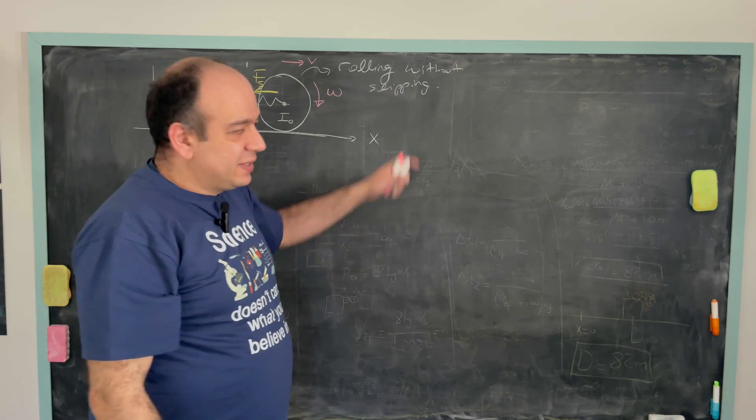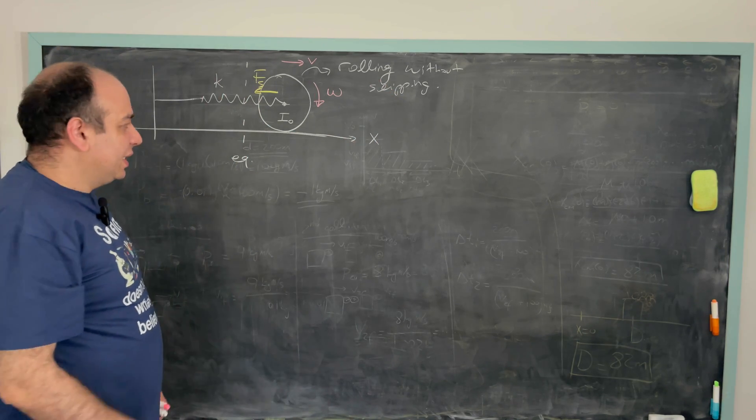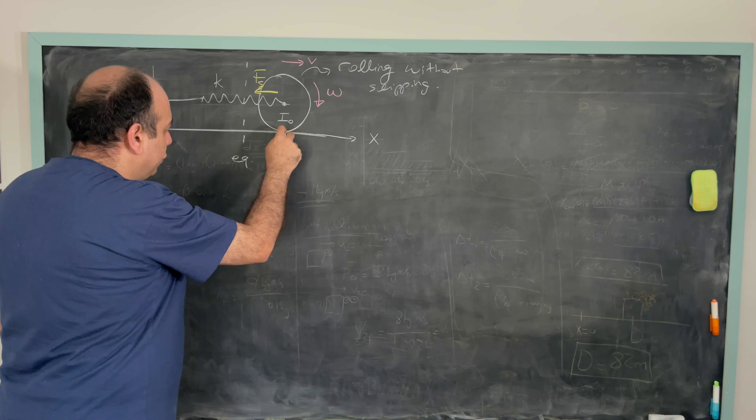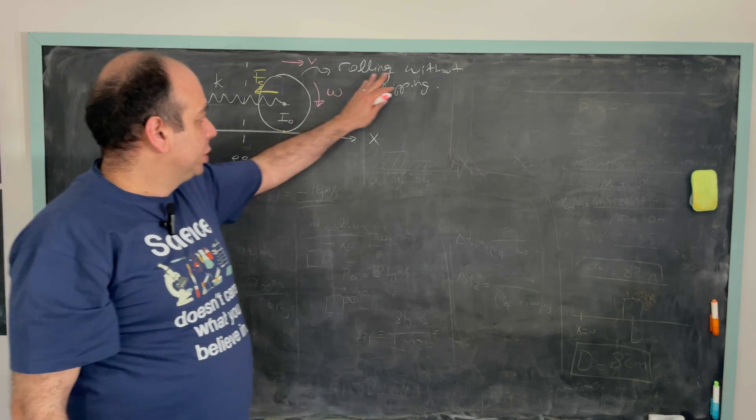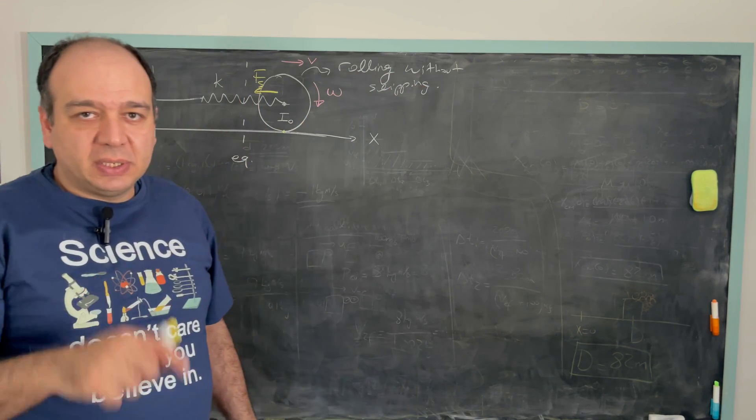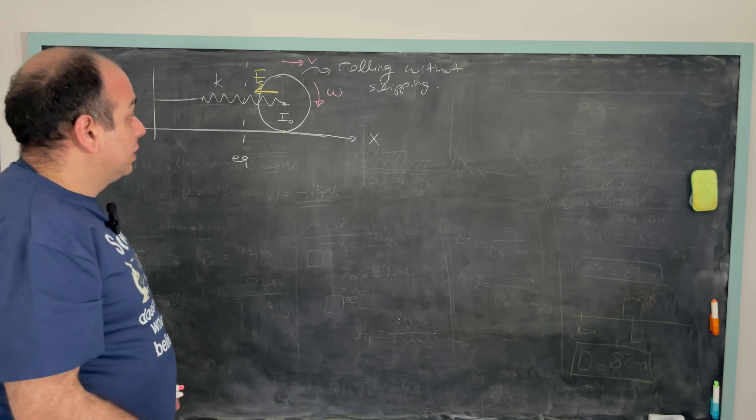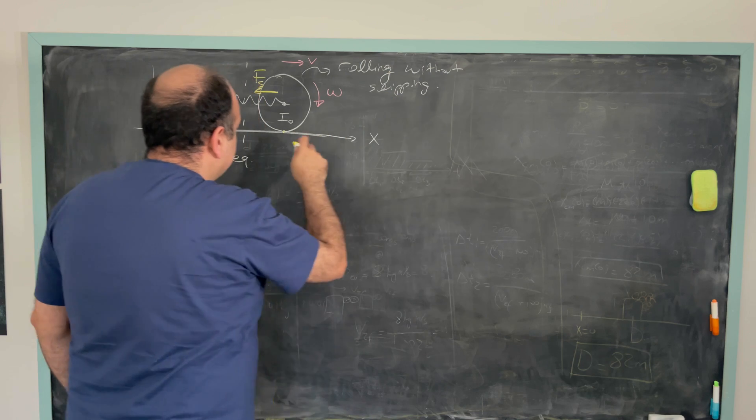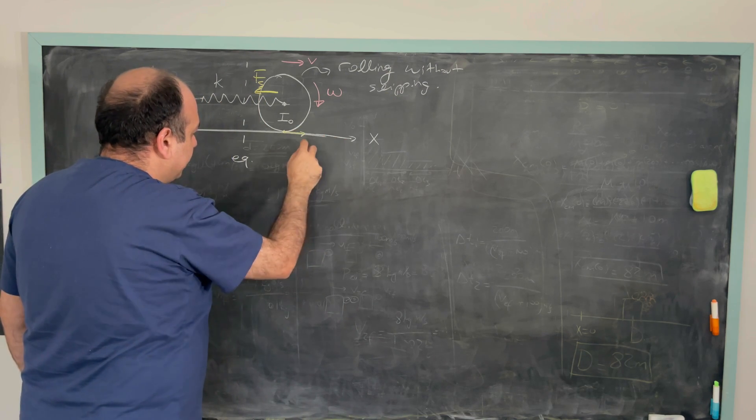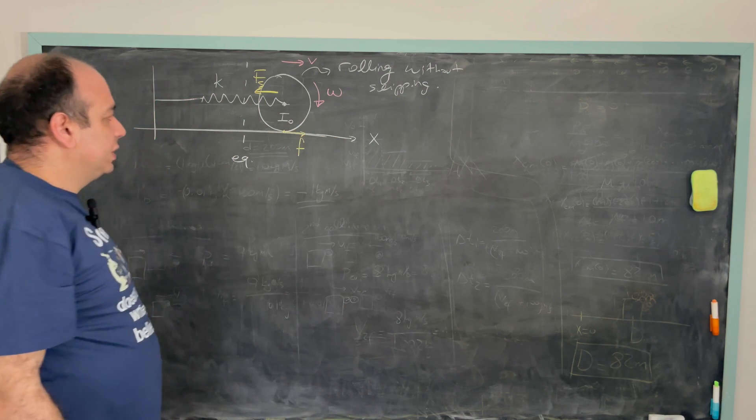Since this is a rolling motion without slipping, that friction would be static friction. So if you do not remember the rolling motion, I'll actually put some links to the videos where we discuss all the details about rolling motion. So since this is a rolling motion without slipping, I'll assume there is a static friction force like that.